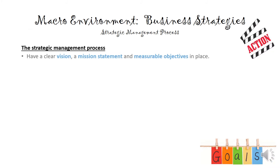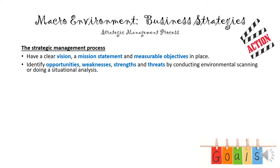If we look at the strategic management process: first of all, we need to have a clear vision, mission statement, and measurable objectives. By measurable objectives, we mean it must be possible to measure whether we are reaching our goals — not just 'we want to increase our sales,' but rather 'we want to increase our sales by 10%' or 'increase our market share by 5%.' Then we're going to identify opportunities, weaknesses, strengths, and threats by conducting environmental scanning or a situational analysis using industrial analysis tools.